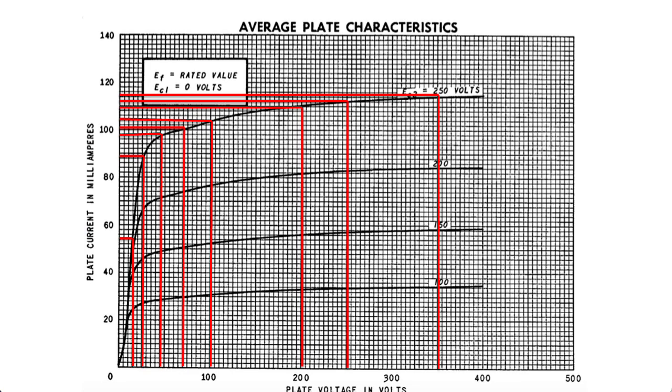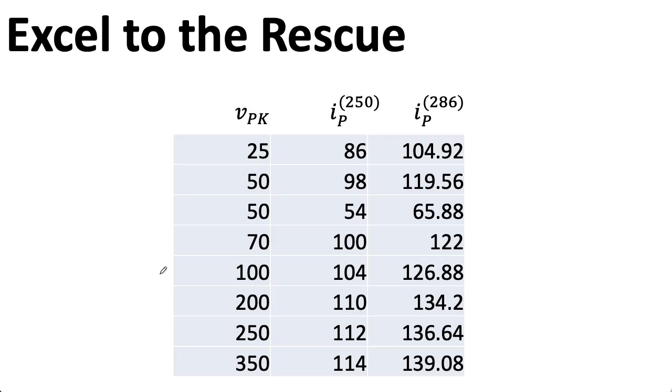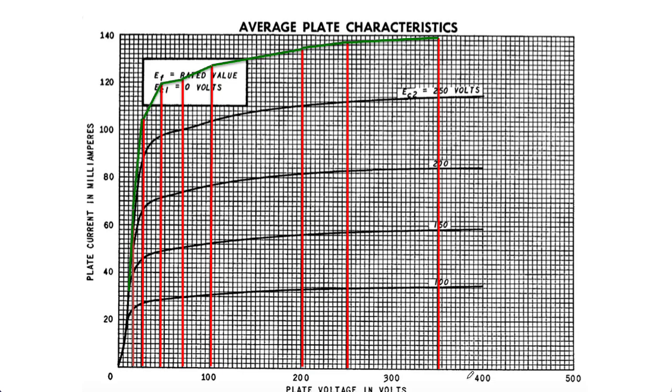So I read a bunch of points off the plot. Basically, I picked points where it looked like the 250-volt screen-to-cathode line lined up nicely with some of the grid lines, so it would be easy to read the results. And then I put all of that information into an Excel spreadsheet. So this is what I read off the graph. And then I multiplied each of these numbers by 1.22 to get this number here. And then I took these points and plot them on the graph to come up with the green line that you see here. And we have a line associated with 286 volts.